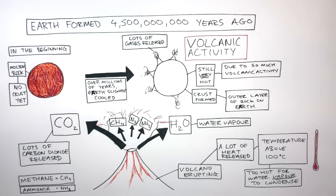Earth's early atmosphere was formed due to lots of volcanic activity. This released lots of carbon dioxide and water vapour, and then small amounts of methane, nitrogen, and ammonia.